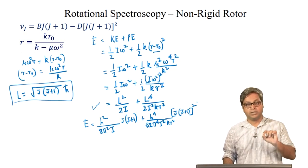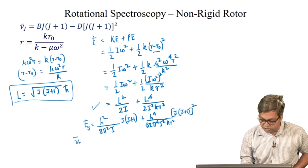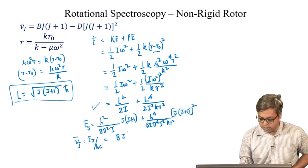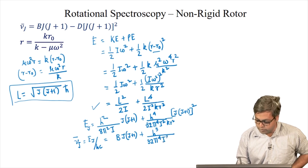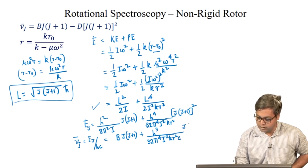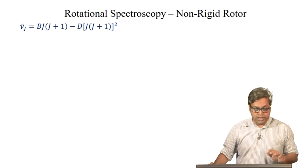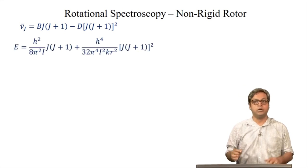If we express E(J) in terms of wavenumbers, ν̄(J) = E(J)/hc, the first term becomes B·J(J+1) as we already know, and the second term becomes h³/(32π⁴I²kr²c) · [J(J+1)]². This expression apparently looks like the equation for centrifugal distortion.